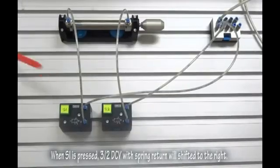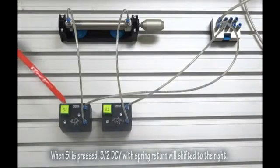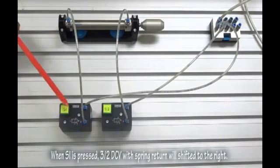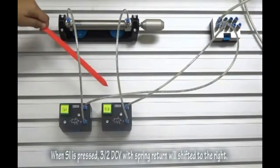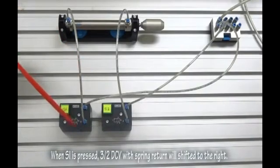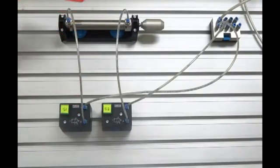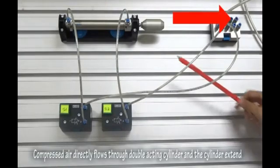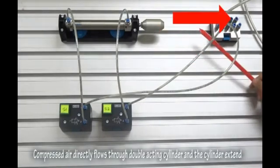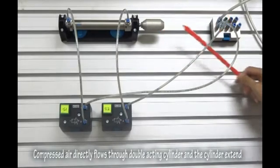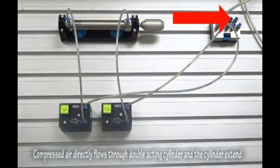When S1 is pressed, 3 2-way DCV with spring return will shift it to the right. Compressed air directly flows through double-acting cylinder and the cylinder extend.